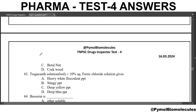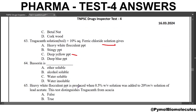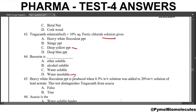Next question: tragacanth solution plus 10% aqueous ferric chloride solution gives what result? It gives a deep yellow precipitate. Next question: bassorin is a water-insoluble agent which is present in tragacanth. Tragacanth contains two fractions: the water-soluble part known as tragacanthin, which constitutes 8 to 10%, and bassorin, which is the insoluble part.